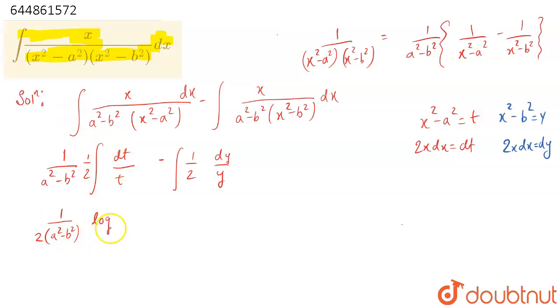So this is log|t|, where t = x²-a². So it is log|x²-a²| - log|x²-b²| + C. This whole expression is in brackets.